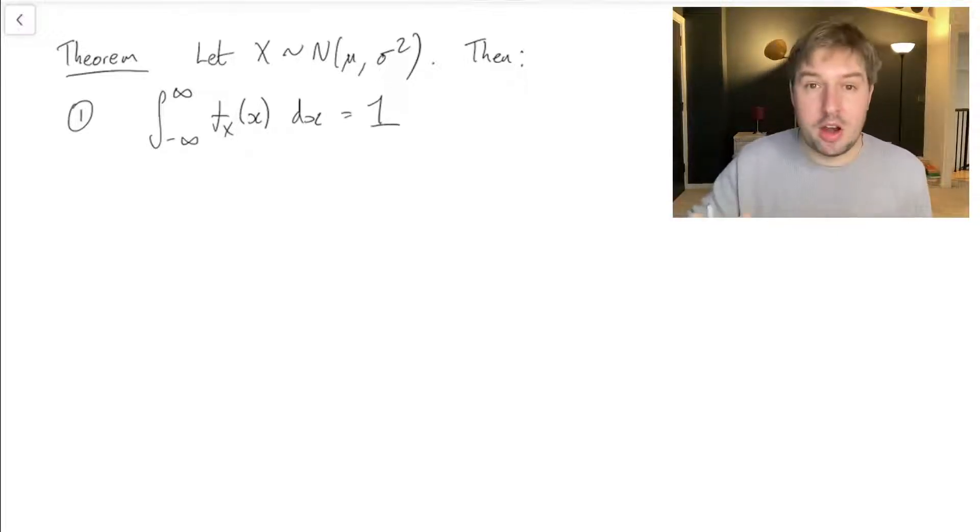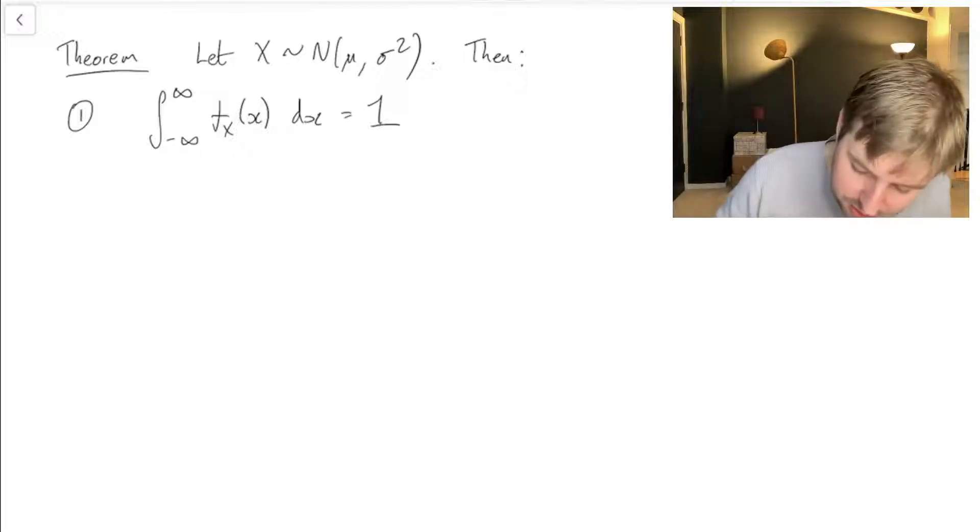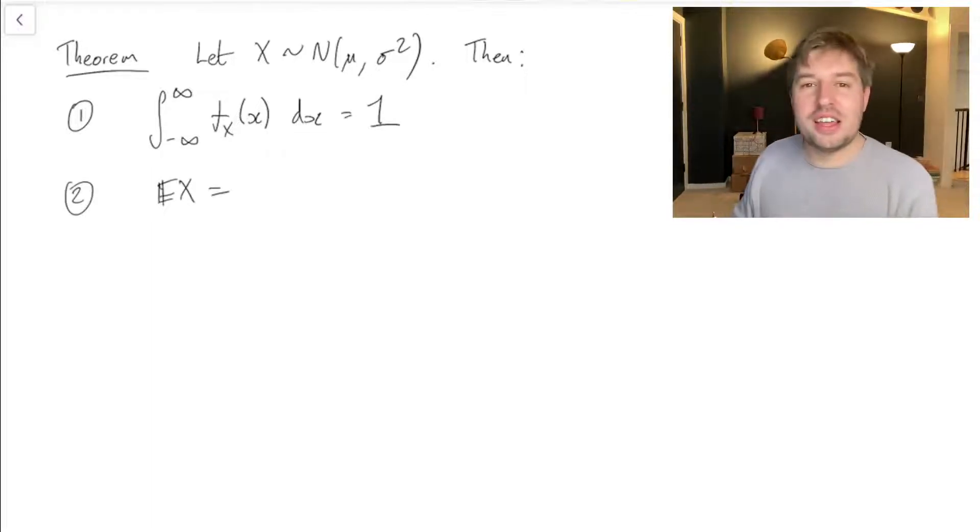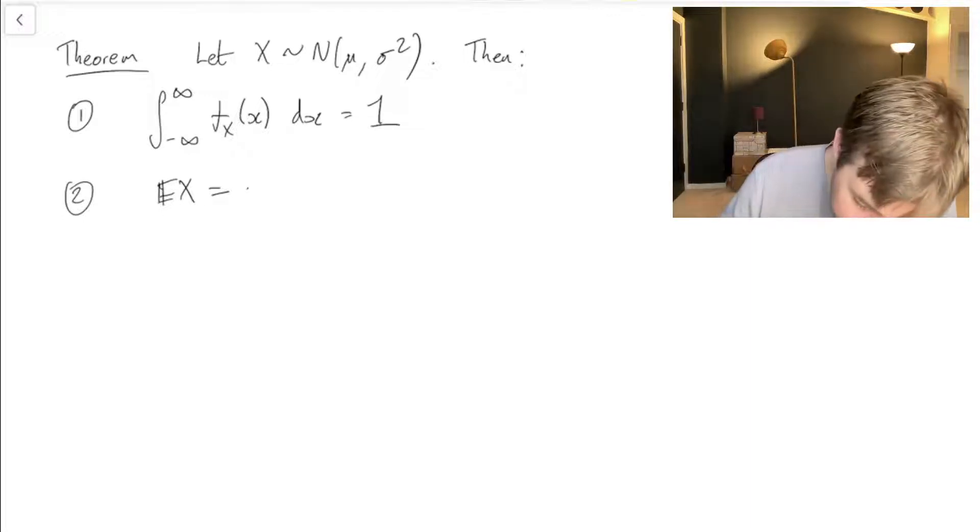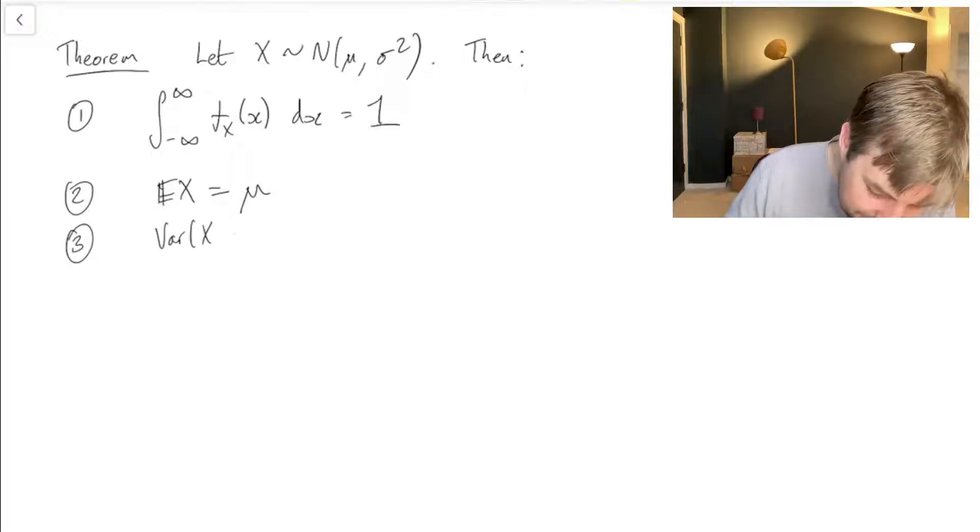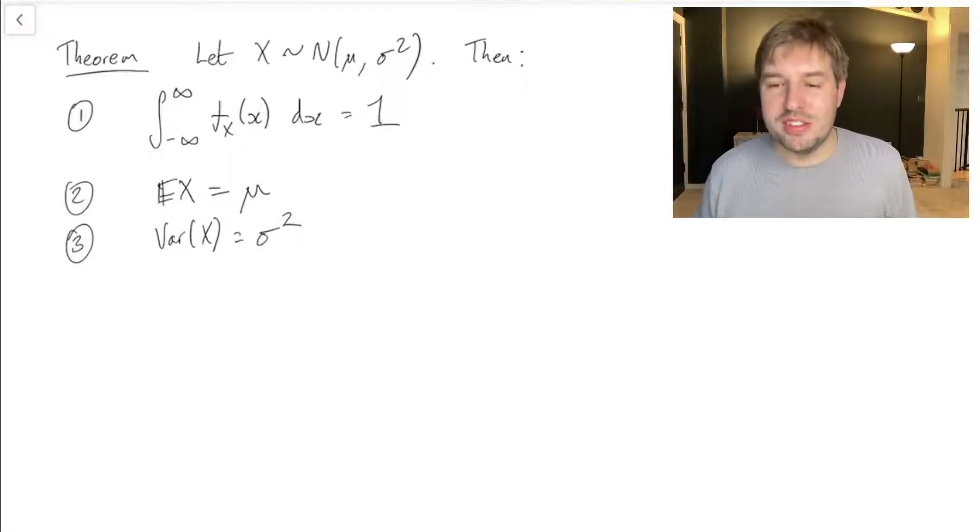Obviously, we know that for a random variable, the integral of the PDF does have to be 1, and so that does happen to be true here, so that's good news. The expectation of X, in the least surprising and most spoiled results we have, is indeed the parameter μ, and the variance of X is indeed the parameter σ² in news that will surprise no one.